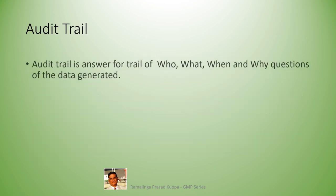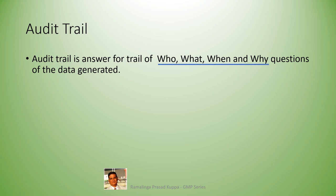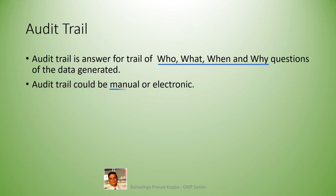Audit trail is the trail of who, what, when, and why questions of data generated. Many get confused with the similar-sounding words trail and trial. A trail is a connection among several objects or items — the connections being who, what, when, and why. If there are justifiable answers to these queries, your data passes the requirements of audit trail. Audit trail could be manual or electronic. Manual operated equipment should have data on log books to answer who, what, when, and why. This is acceptable audit trail compliance.